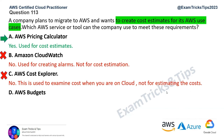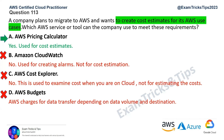Option D, AWS Budgets, is used to define thresholds and control usage once you're already on the cloud. You can set budget thresholds, receive alarms when limits are approached, and notify administrators to take action — but it's not for estimation. So the correct answer for question 113 is Option A, AWS Pricing Calculator.